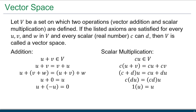Typically this is how we define a vector space: let V be a set on which two operations — vector addition and scalar multiplication — are defined. If the listed axioms are satisfied for every u, v, and w inside V, and every scalar (typically real or complex numbers) c and d, then V is called a vector space. We have five axioms under addition and five under scalar multiplication.